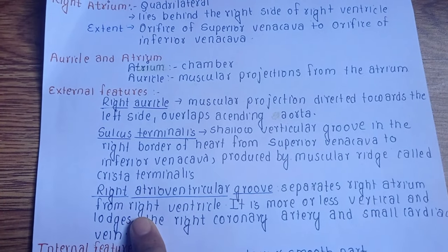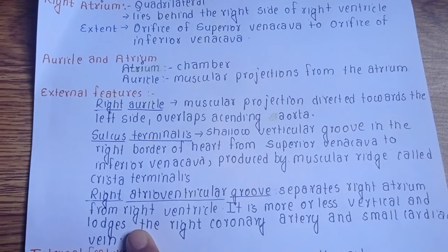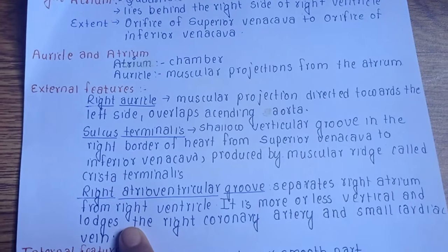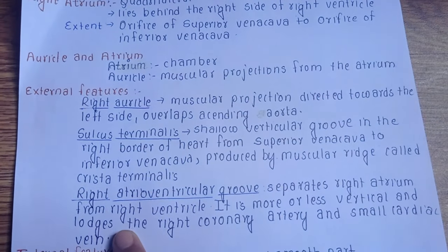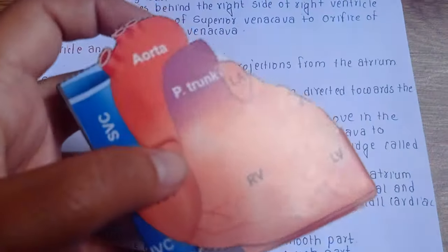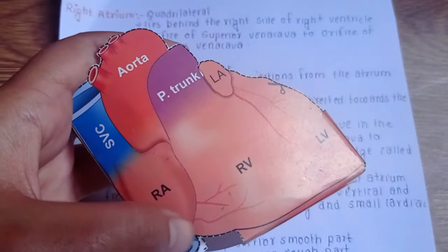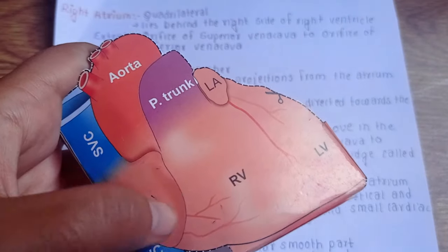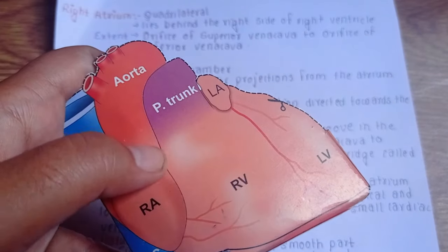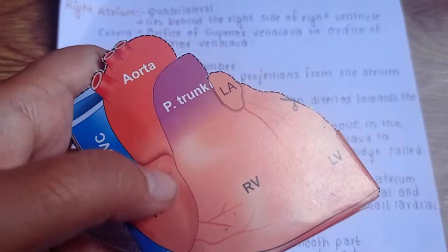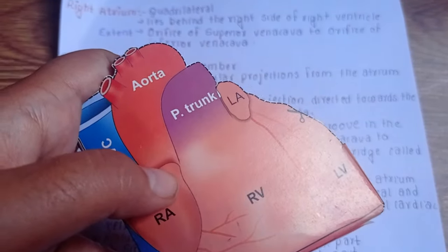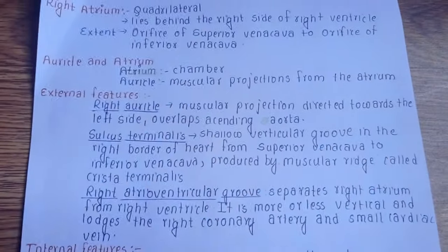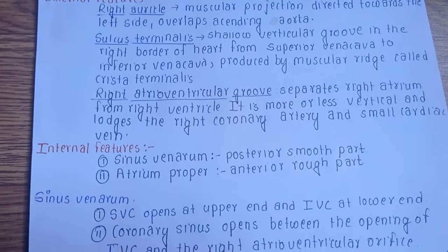The third external feature is the right atrioventricular groove, which separates the right atrium from the right ventricle. It is more or less vertical and lodges the right coronary artery and the small cardiac vein. This groove separates the right auricle and the right ventricle.